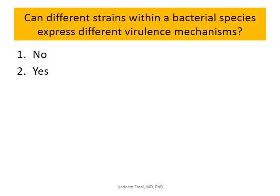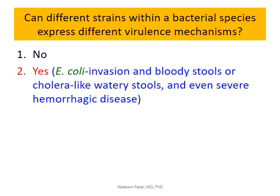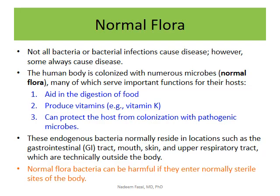Another common question: can different strains of the same bacteria have totally different virulence mechanisms? Yes — E. coli has many different strains, each producing a specific disease entity. They may have a dominant, unique virulence mechanism that separates them into different groups within one species but different strains.